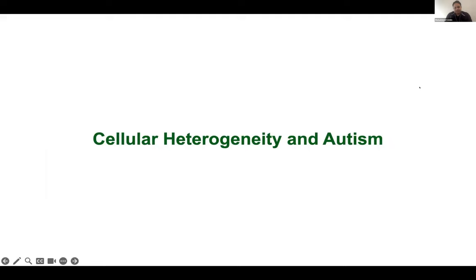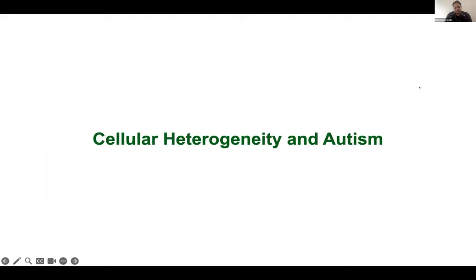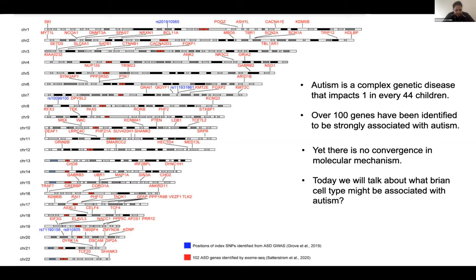If you want to look at cellular heterogeneity in autism, autism is a diverse disease — a whole collection of rare conditions within the spectrum. About 100 genes have been mapped onto an ideogram showing genes with causal mutations validated for autism. Understanding which cell type these genes converge on is a big question for us, and also illustrates how heterogeneous autism is in terms of phenotypes and genotypes.